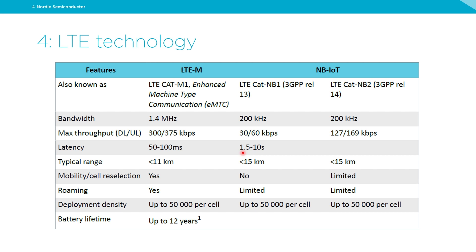Latency is dependent on how many retransmissions you require, which depends on signal quality to the base station — the RSRP. In some edge cases, if you're really at the borderline to a base station, it can actually be more energy efficient to go with narrowband IoT, but these are very edge cases.